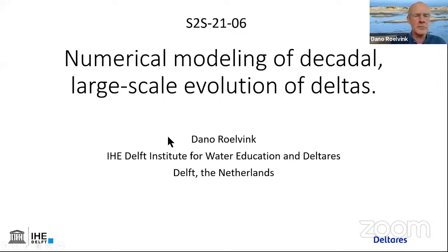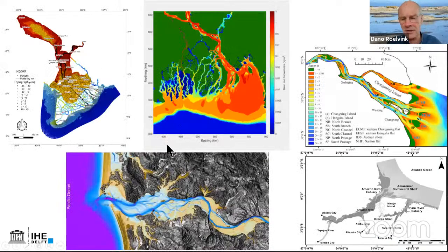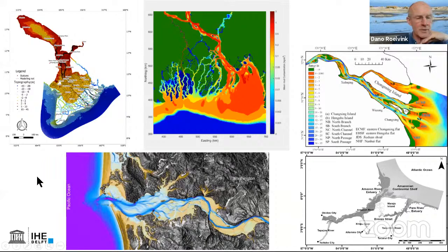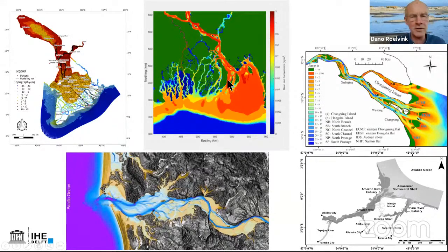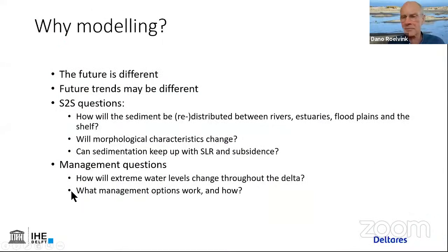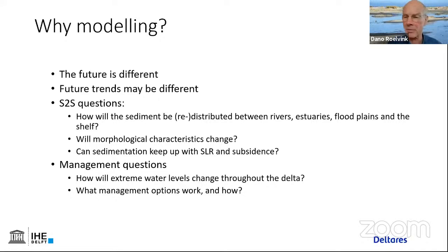We'll certainly see a lot of the Mekong and the Bangladesh system. But first, why should we do modeling? Well, the future is different, and future trends may be different — we cannot just hope to extrapolate from past trends. Some typical source-to-sink questions that modeling can help with: how will sediment be redistributed between rivers, estuaries, floodplains, and the shelf? Will morphological characteristics change? Can sedimentation keep up with sea level rise and subsidence?